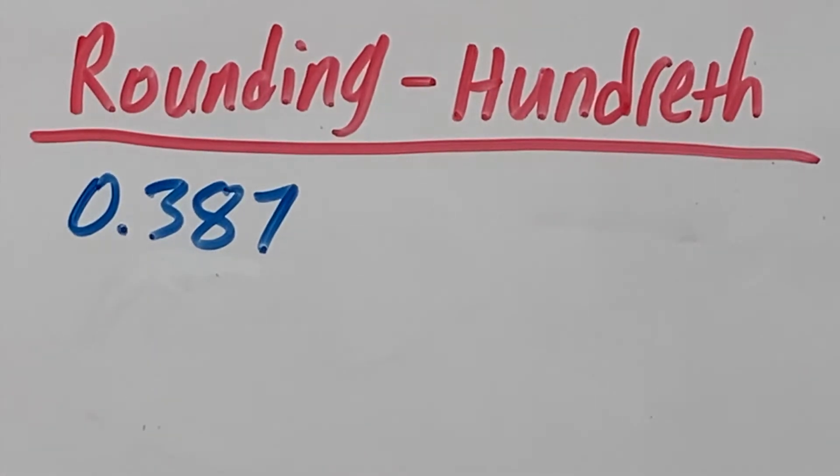Hello and welcome! In this video, we're going to look at how to round to the nearest hundredth place. For this example, we have 0.387 and we want to round it to the nearest hundredth place.